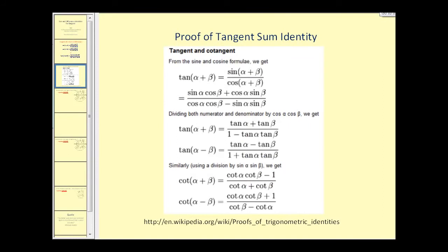The proof of the tangent sum identity is included. The first step is remembering that tangent theta equals sine theta divided by cosine theta, and then applying the sum identities for sine and cosine. You may want to pause the video to look it over, but it is pretty straightforward.